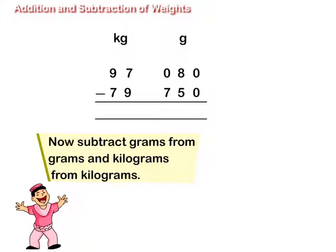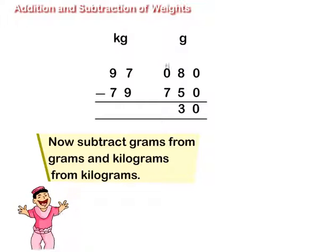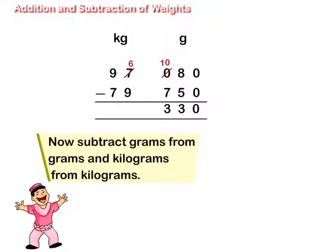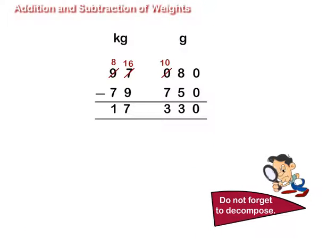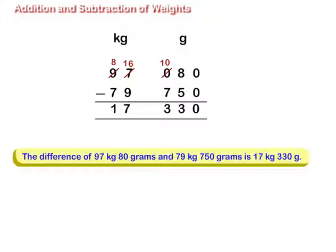Now subtract g from g and kg from kg. Do not forget to decompose. The difference of 97 kg 80 g and 79 kg 750 g is 17 kg 330 g.